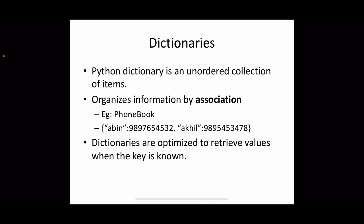Dictionaries are optimized to retrieve values when the key is known. The association is called a key-value pair — the key is the first element and the corresponding value is the second one. If you specify the key, you should be able to return the value, and dictionaries are optimized for such retrieval operations.